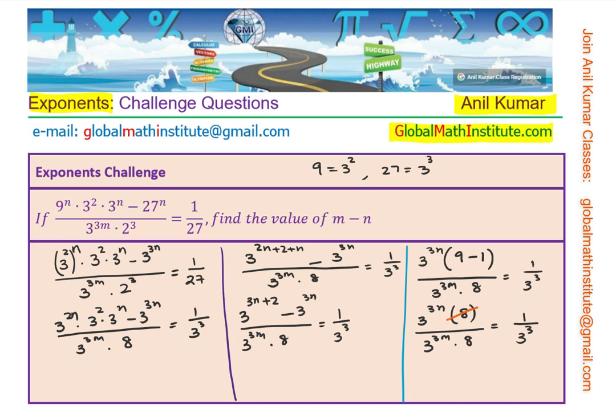The 8 and 8 cancel, and that results in 3 to the power of 3n divided by 3 to the power of 3m on the left-hand side, and 1 over 3 cubed on the right side. So that should give you a result very close to finding what m minus n is.